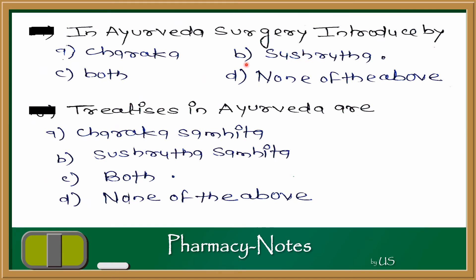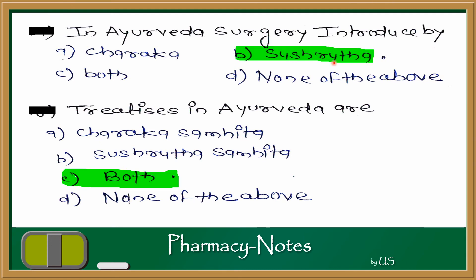Next question: Ayurveda surgery was introduced by whom? In Ayurveda, there are two major texts — Charak Samhita and Sushruta Samhita. Charak focused on plants and medicine, while Sushruta was surgery-oriented. Both Charak Samhita and Sushruta Samhita are the basic treatises in Ayurveda, containing herbs, formulations, and knowledge, with Sushruta Samhita being the basis of Ayurvedic surgery.